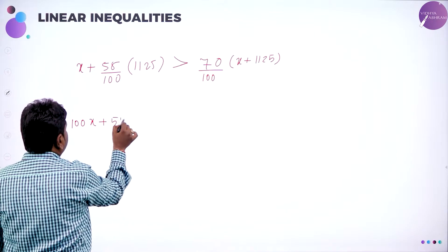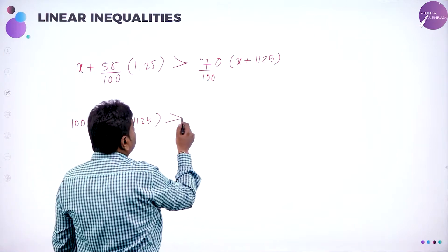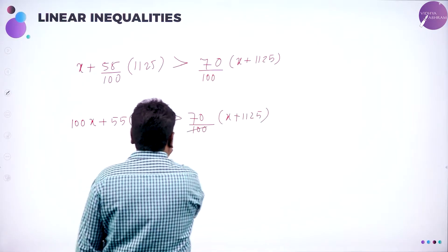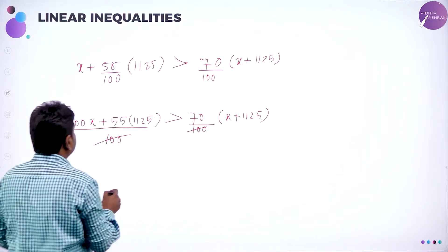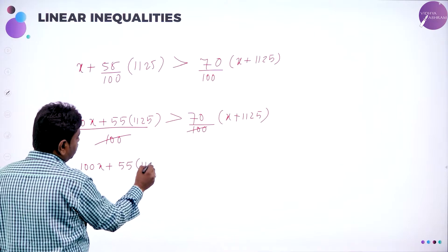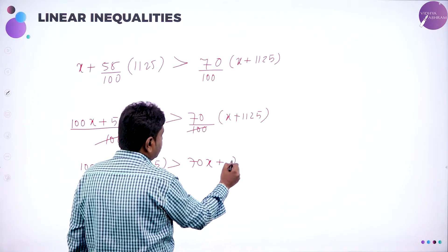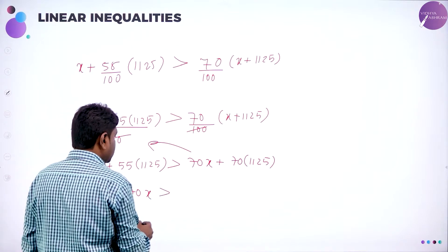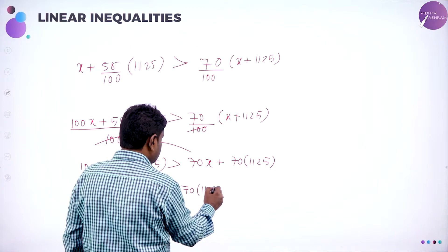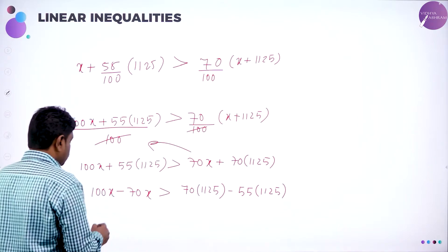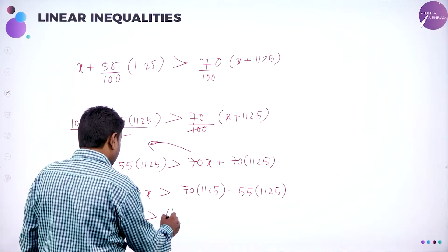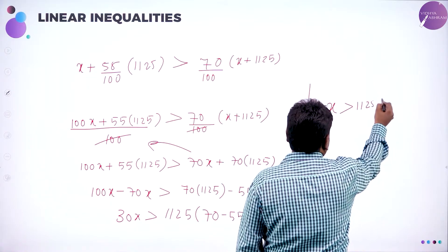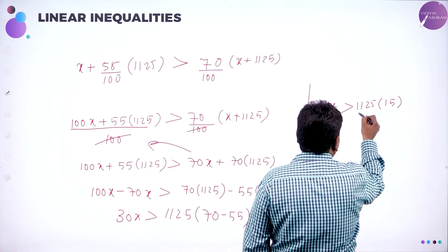Simplify this — again take LCM: 100x plus 55 into 1125 should be more than 70 by 100 into (x plus 1125). Now 100, 100 cancels. Rearrange: 100x plus 55 into 1125 is greater than 70x plus 70 into 1125. Now rearrange — bring this to the side, so it becomes 100x minus 70x greater than 70 times 1125 minus 55 times 1125. This is 30x greater than 1125 into (70 minus 55).